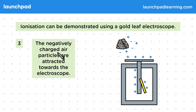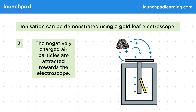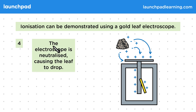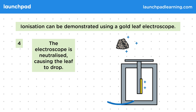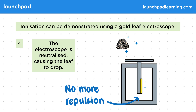The negatively charged air particles are attracted towards the electroscope. The negative ions are attracted to the plate due to electrostatic attraction, as the ions and the plate have opposite charges. The electroscope is neutralised, causing the leaf to drop. The gold leaf then falls, as there is no charge in the rod, so it is no longer repelled.